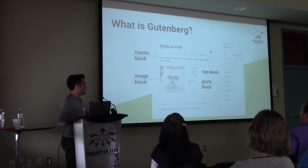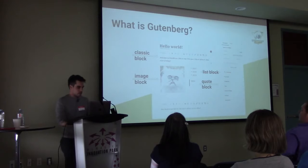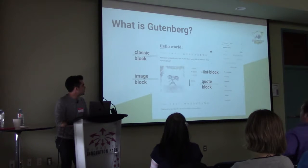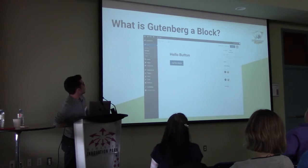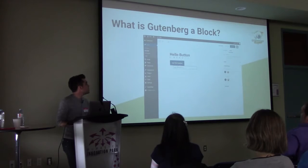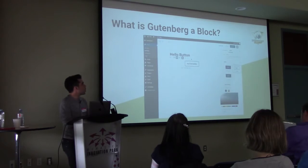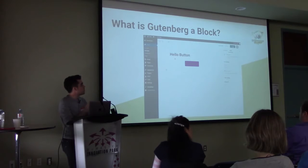There's the image block, which is a simple block that adds an image. There's the list block, the quote block, and there's a columns block that divides content in two — left column, right column. A button can be a block too — small and simple — and you have options only relevant to buttons: color, how you want the text to show, and the alignment. You're not going to find more options than you need.